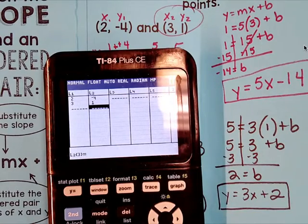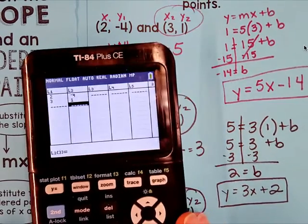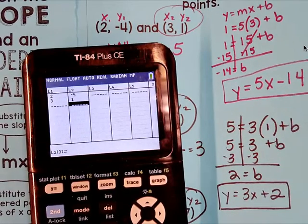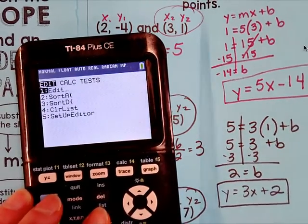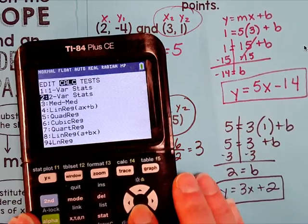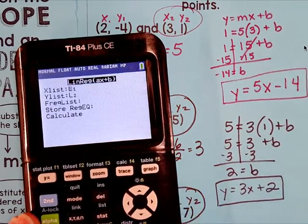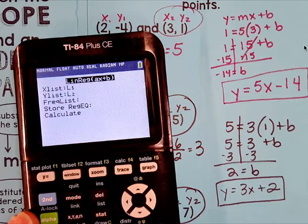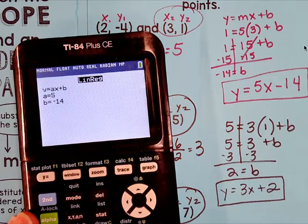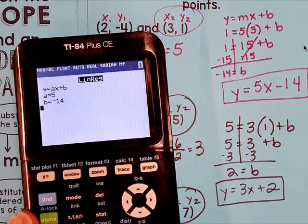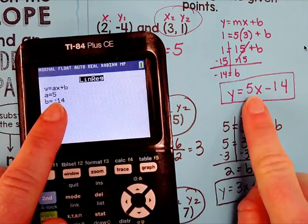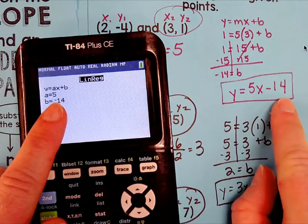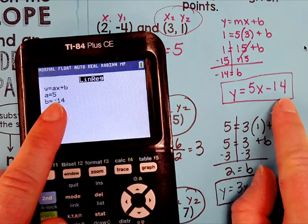Now calculate. Linear regression. So follow the steps again. Stat. Calc. Linear regression. Stat. Calc. Linear regression. Then go down. Hit calculate. 5 and negative 14. Slope is 5. Y-intercept is negative 14. So that's correct.